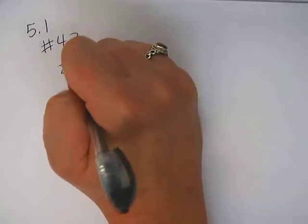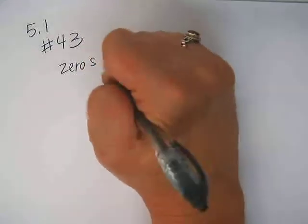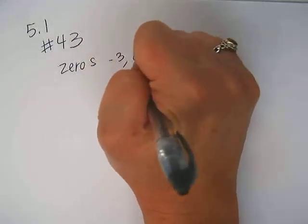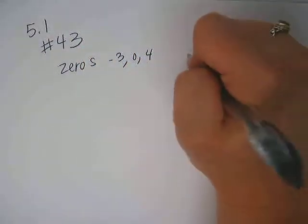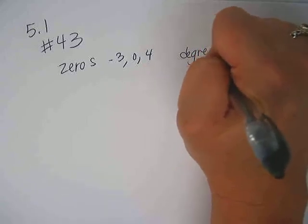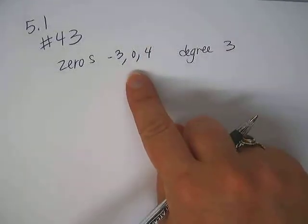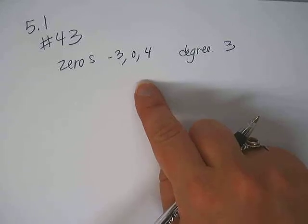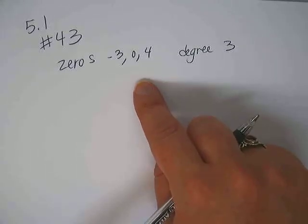The instructions say, form a polynomial function whose real zeros and degree are given. So the zeros given are negative 3, 0, and 4. And we're trying to create a degree 3 polynomial, which makes sense since we have three zeros. We should always have the same number of zeros as degree.